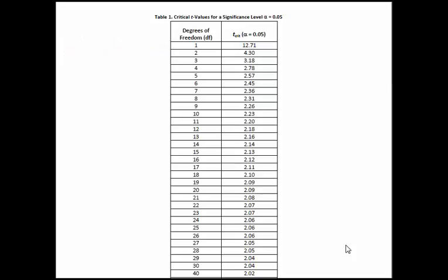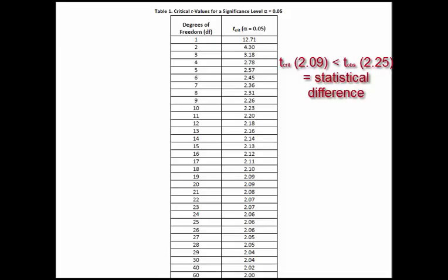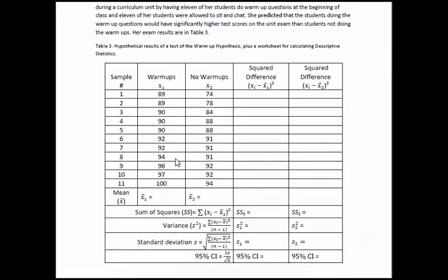So our critical value is smaller than our t observed value. And so, like I said before, if we ended up with a larger value, then we can reject the null hypothesis. And so in this case, the teacher can reject the null hypothesis. So the teacher can say that there is a statistical difference between the two groups of students that she studied, that the difference between the means couldn't have happened just randomly. There needed to be something there causing that effect to occur. So that's how you do the t test.